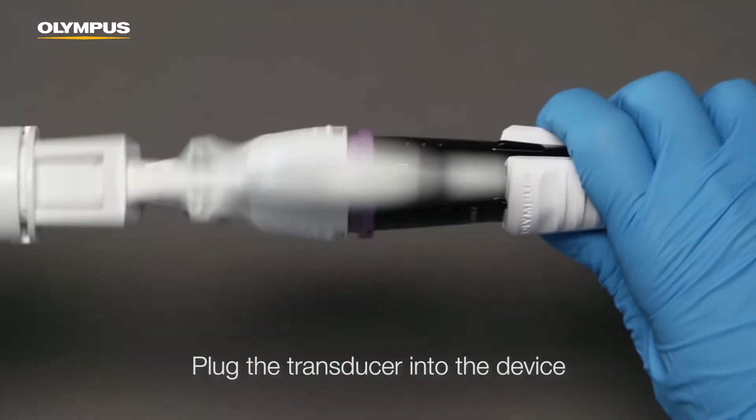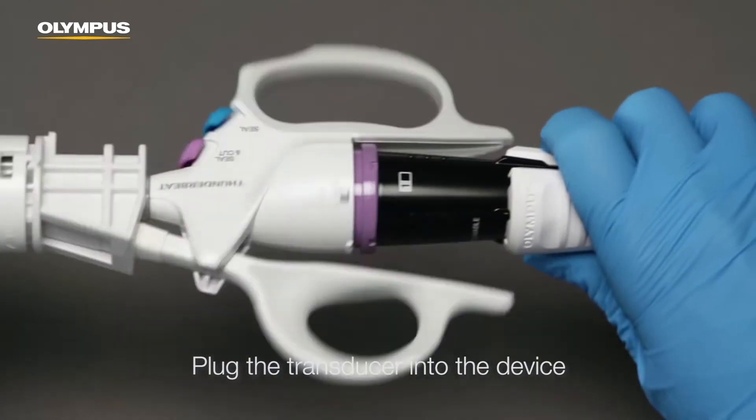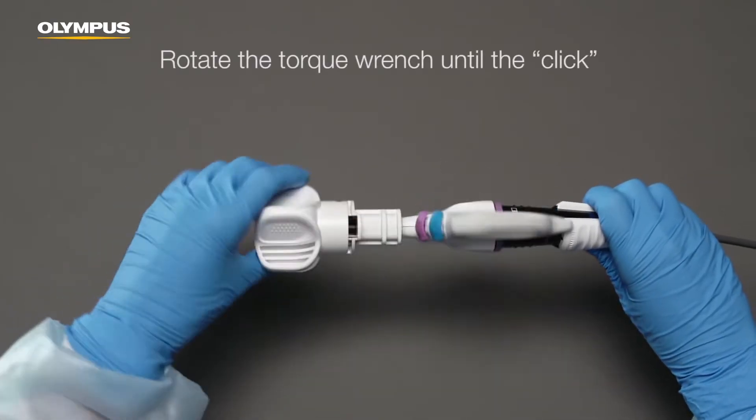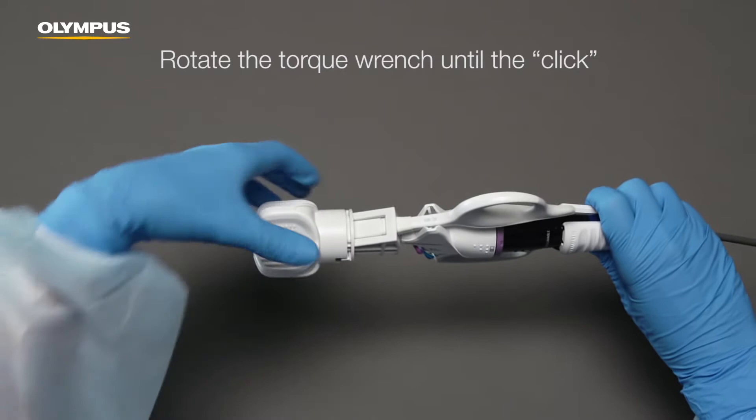Hold the stabilizer tightly and rotate the torque wrench clockwise until you hear a click. The final rotation may require more force.